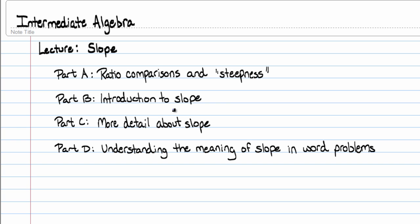There's no such thing as slope for a curve. So that's just a little side note. Anyway, Part C here, we're going to talk a little bit more about slope and give more detail about some concepts that you might have never known about slope. And then the next video, we'll talk about some applications and how to understand the meaning of slope within applications, which is probably the most important idea in a lecture on slope.